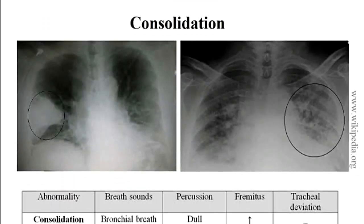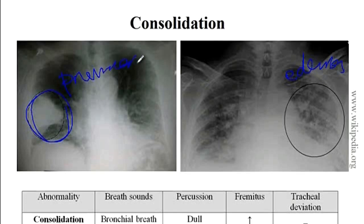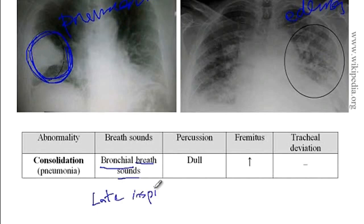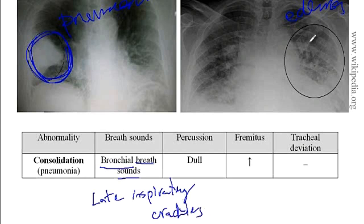The final conditions are consolidations of the lung, such as pulmonary edema or pneumonia. With consolidations, as discussed earlier, there are no longer vesicular breath sounds but rather bronchial breath sounds, and there are also late inspiratory crackles on auscultation. Since there is fluid in the areas, there is dullness to percussion. Since vibrations transmit better through fluids than through air, there is increased fremitus. That concludes the discussion of the lung lesions.